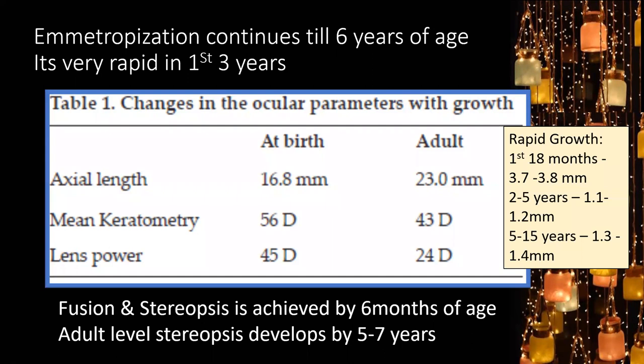Emmetropization continues to six years of age and is most rapid in the first three years. At birth, axial length is 16.8 mm, growing 3.7–3.8 mm in the first 18 months, then 1 mm over the next 5 years, and another 1 mm over the next 10 years. Mean keratometry is 56 diopters at birth, reaching adult value of 43 diopters by around 12 years. Fusion and stereopsis (gross) are achieved by six months; adult-level stereopsis by five to seven years.